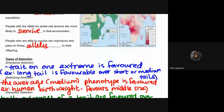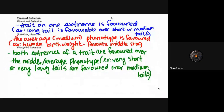When we look at the types of selection, this is probably the most important section for this unit. There are three types: directional selection, where a trait on one extreme is favored — for example, long tails favored over short or medium tails; stabilizing selection, where the average or medium phenotype is favored — for example, human birth weight, where too small or too large reduces survival; and disruptive selection, where both extremes of a trait are favored over the average.